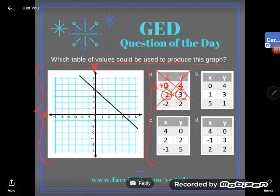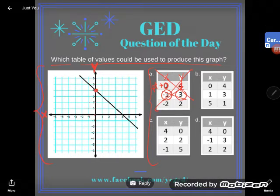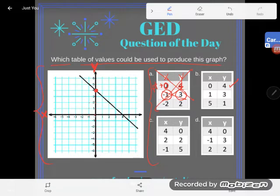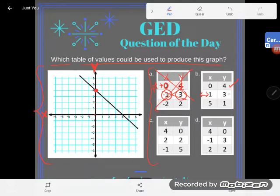Okay, let's try B. So B says (0,4) again, so (0,4) looks promising, that point checks. Then I see the point (1,3), so what does that mean? That means 1 in the horizontal direction—remember this is a left or right movement—1 in the horizontal direction, and then 3 in the vertical direction, up or down.